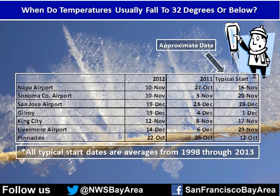So when exactly do temperatures usually fall to 32 degrees? Pictured here is a table which displays numerous locations through the area and when temperatures usually fall to the freezing mark. In general, parts of the North Bay as well as southern Monterey and San Benito counties fall to near freezing late October to late November, while elsewhere it usually hits 32 degrees in December.